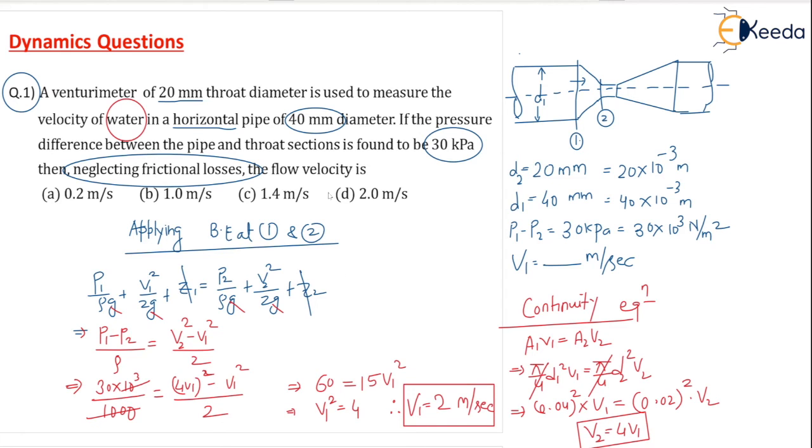So which option is correct? D option is correct: 2 meters per second.